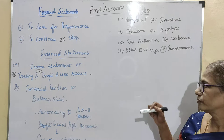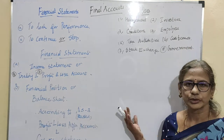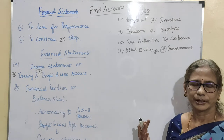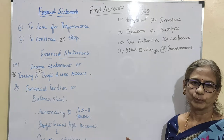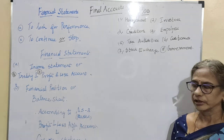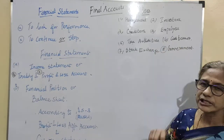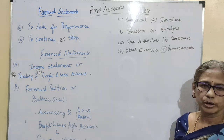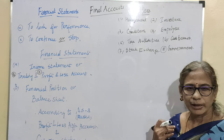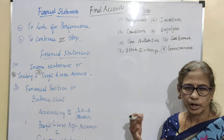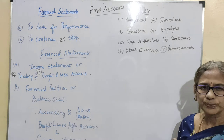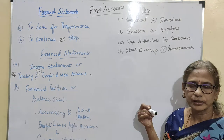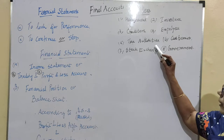Employees are also stakeholders - naturally when the business grows, employees get a good package, good income, an increase in their salaries, and a good amount of bonus at the end of the year. Tax authorities want to find out whether proper appropriation is made for depreciation on assets and whether provisions are made on liabilities, in order to determine the actual tax to be levied on the business.